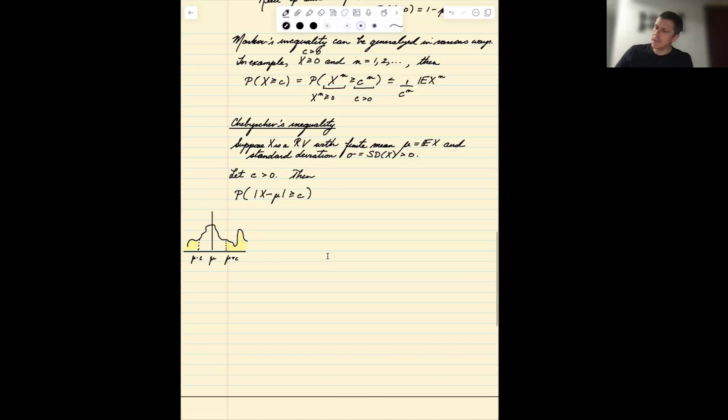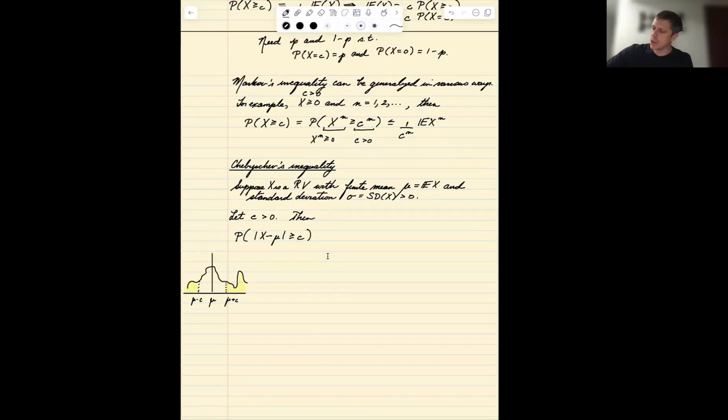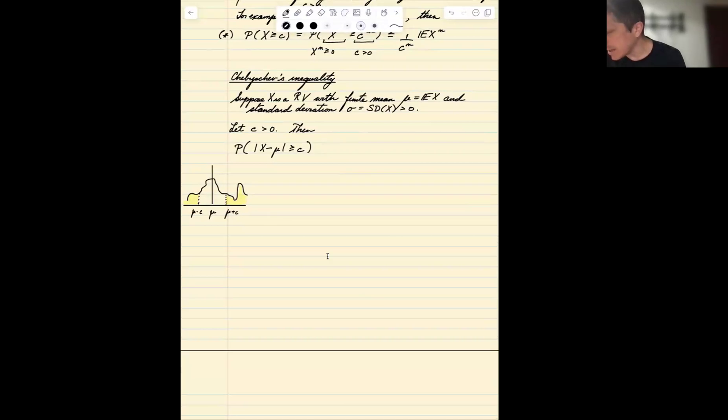Well, remember what we did in this application of Markov's inequality: if we have non-negative random variables and if we have non-negativity on both sides and we raise to a power, we don't disrupt that relationship. And so the probability that x is bigger or equal to c is actually equal to the probability that x to the n is bigger or equal to c to the n. Well, in this case, we actually do have a non-negative random variable in this absolute value.